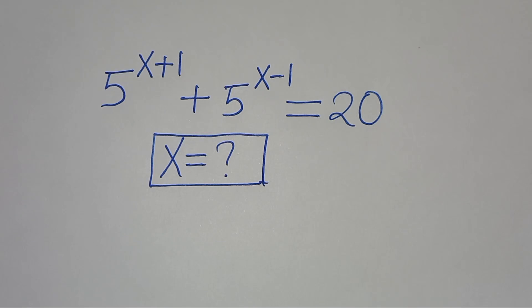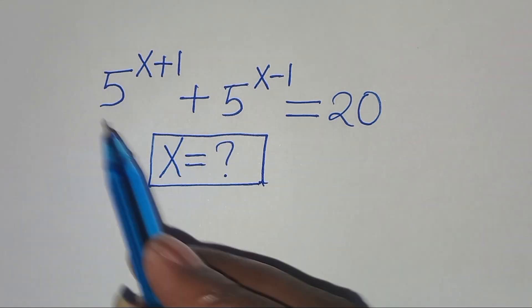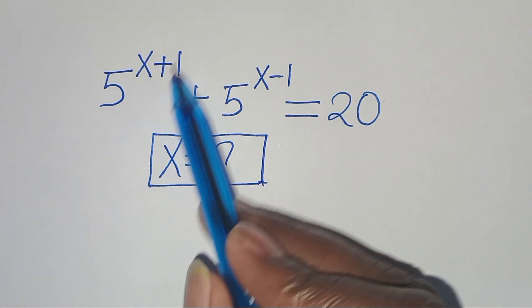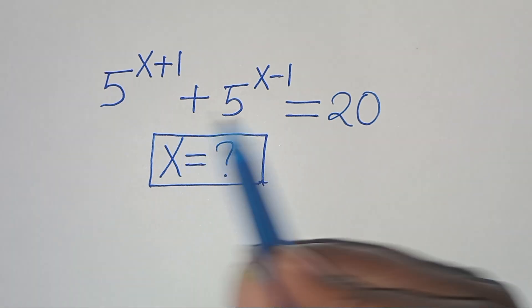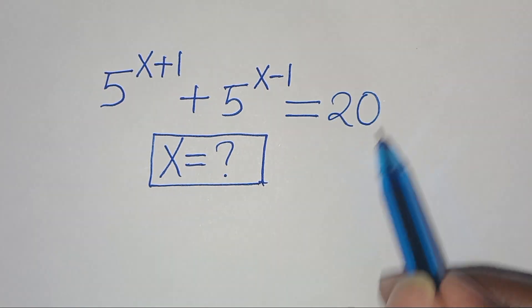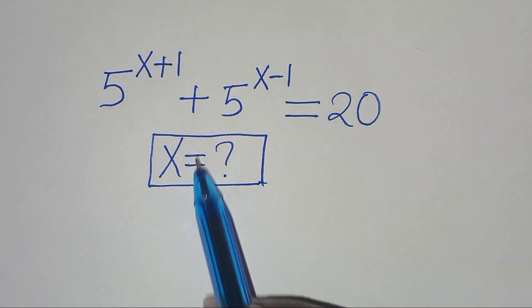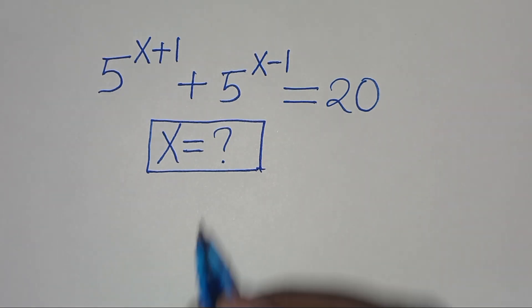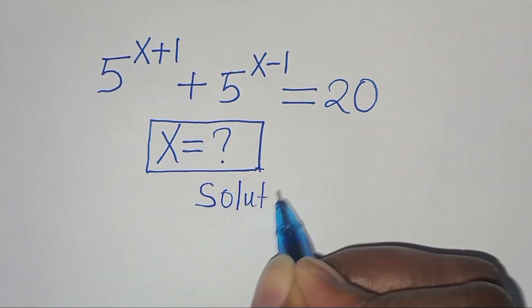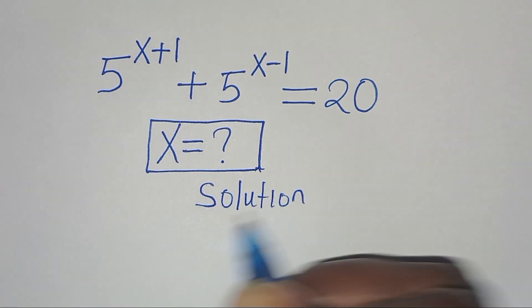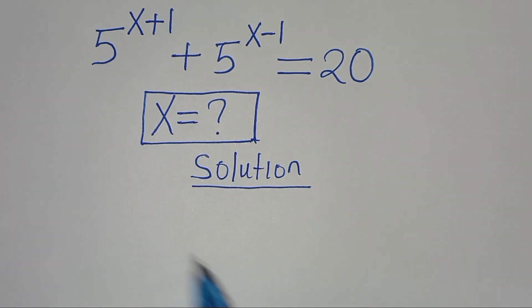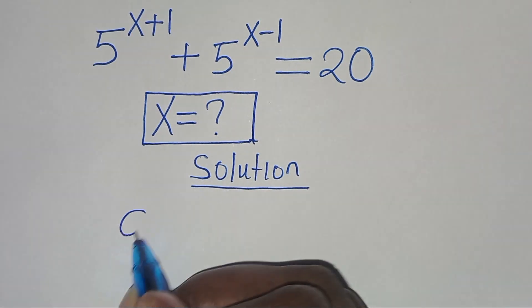Hello everyone, you're welcome to solve this nice exponential equation: 5 to the power of x plus 1, plus 5 to the power of x minus 1, is equal to 20. What is the value of x? Now let's provide a solution. This exponential equation is in the form of a to the power of n plus m.